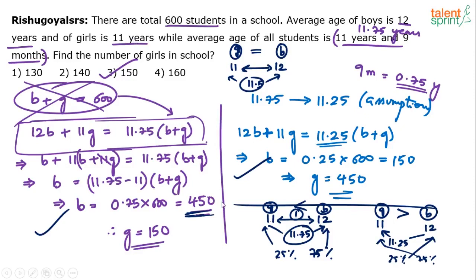And you'll get the answer. That's the solution for this one. The final answer for the number of girls in the school is 150.